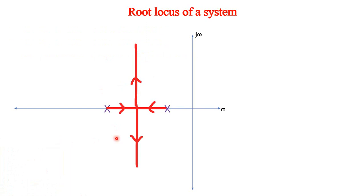First, let us consider the root locus of a given system. This is a system which has only two poles, so there will be only two root loci. They break away and one goes like this and another root locus goes like this. Therefore, this system is stable. Let us understand what will happen to the system behavior when a zero or pole is added.